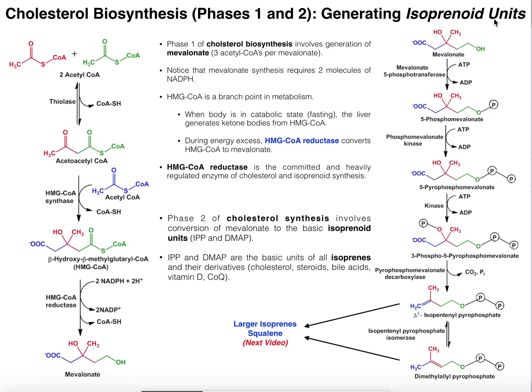Our isoprenoid units are molecules like isopentanyl pyrophosphate and dimethyl allyl pyrophosphate. These are very important molecules because not only can they be used to synthesize cholesterol, they're also used to synthesize a very wide variety of compounds necessary for life. For example, the active form of vitamin D, calcitriol, is synthesized from these. Coenzyme Q is also synthesized from these, and there's a lot of other stuff. So generating these isoprenoids is very important.